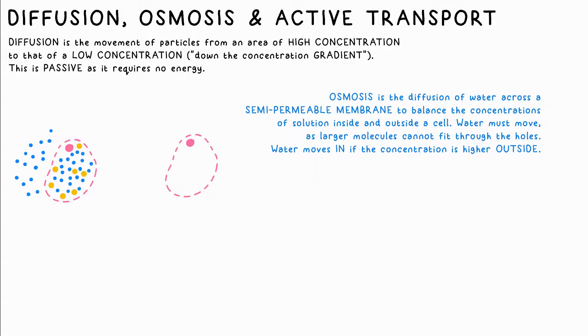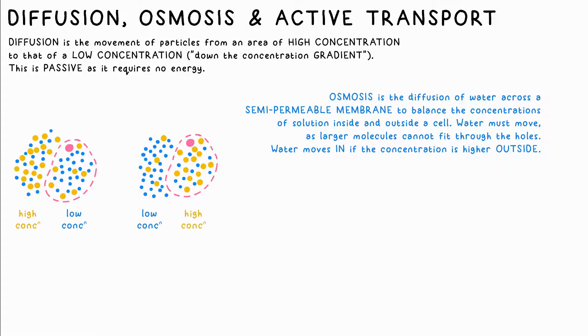Osmosis is the name specifically given to the diffusion of water across such a membrane. For example, if there is a higher concentration of glucose outside a cell, the glucose cannot diffuse in to balance the concentration, so instead the water moves out of the cell, resulting in a decrease in its mass.